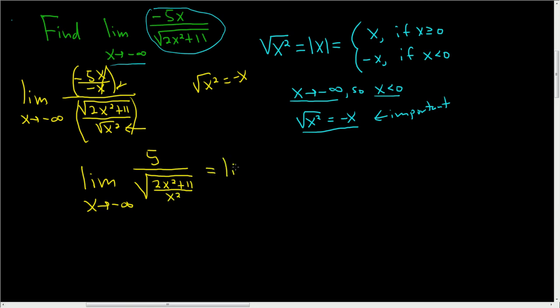so this is equal to the limit as x approaches negative infinity of 5 over, and then we have 2x squared over x squared, which is just 2,